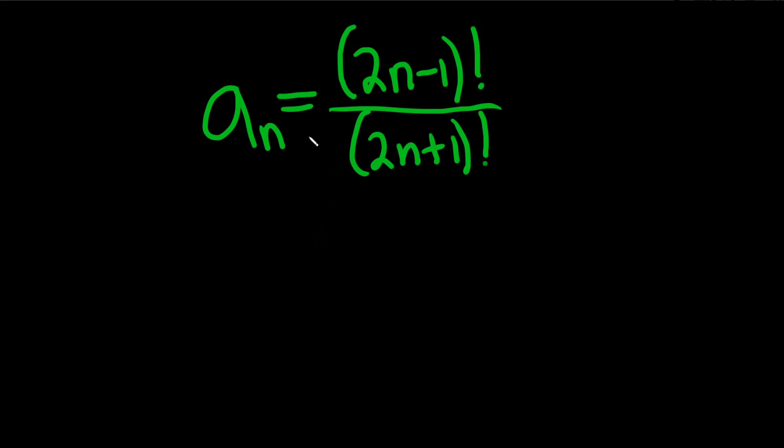We're being asked to determine whether this sequence converges or diverges. So to do this basically we just have to take the limit. If we get a number as an answer, then we say the sequence converges. If we don't get a number, then we say the sequence diverges.